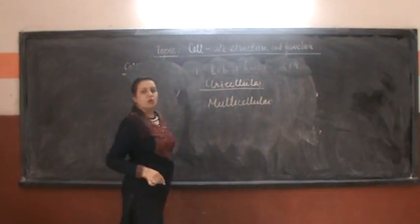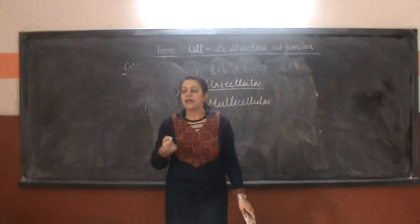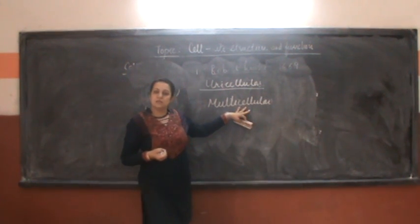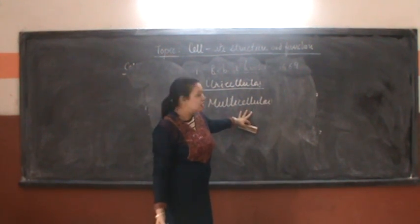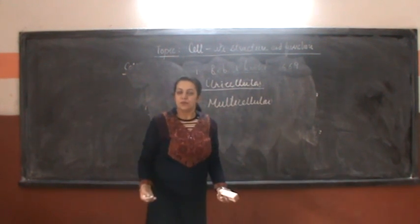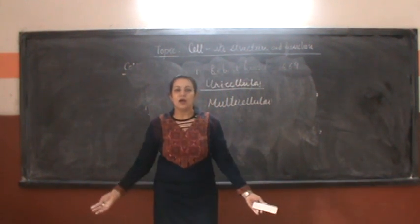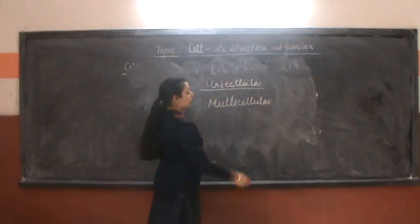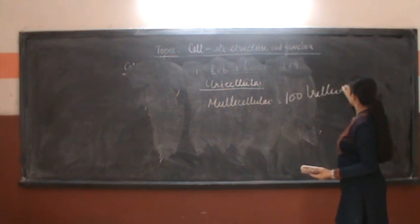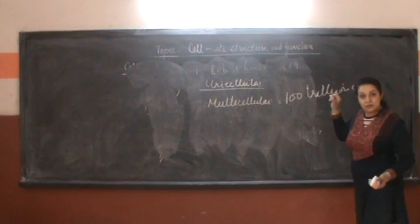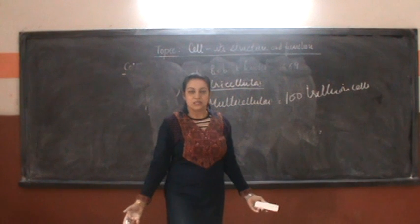Unicellular organisms are those which are made up of one single cell — for example, an amoeba or a paramecium. Whereas multicellular organisms are made up of a variety of cells; they are a combination of different types of cells. So they are multicellular, as in you and me, plants, a cow, a buffalo, a sheep — all are multicellular organisms. Multicellular organisms are made up of a hundred trillion cells; especially a human being is made up of a hundred trillion cells, and that's a huge number.